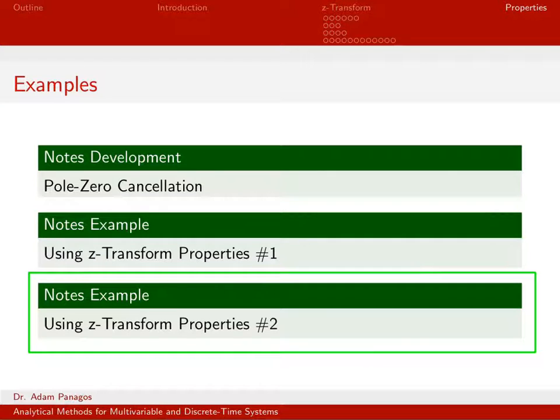Let's take a look at another example where we use Z-transform properties to help compute the Z-transform of a discrete-time signal.